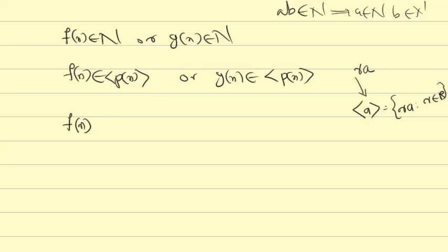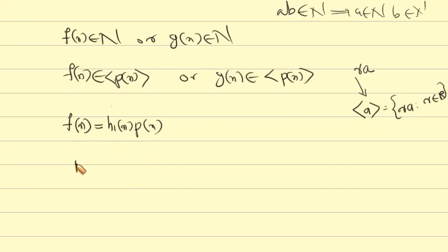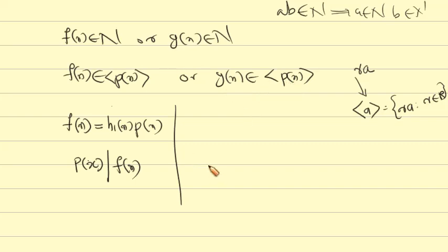So f(x) is now a multiple of p(x); that is, f(x) = h₁·p(x), meaning p(x) divides f(x). Similarly, g(x) is such that p(x) divides g(x). Then p(x) divides f(x) or p(x) divides g(x).